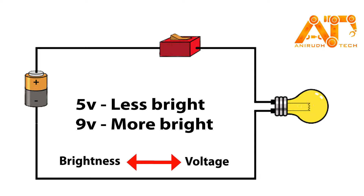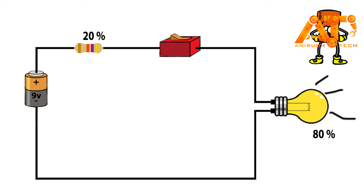So how can we change the brightness of the bulb without changing the power supply? We can't change the power supply every time we need to change the brightness. Well, we can add a resistor so some voltage will be consumed by the resistor and our bulb will glow less brightly.